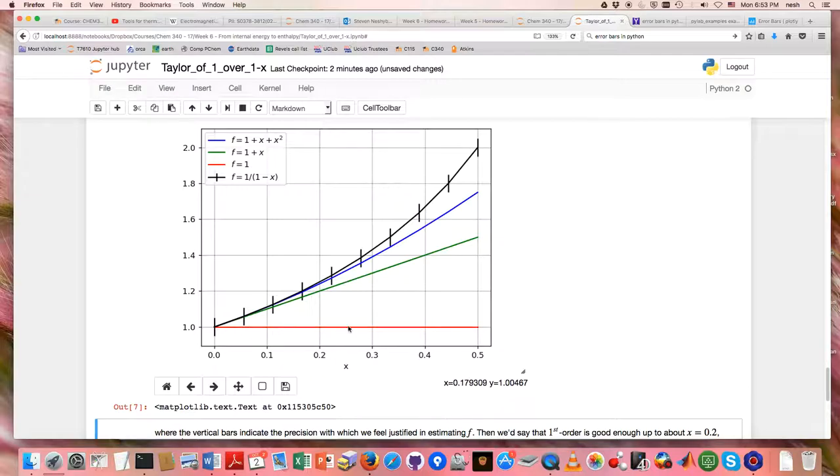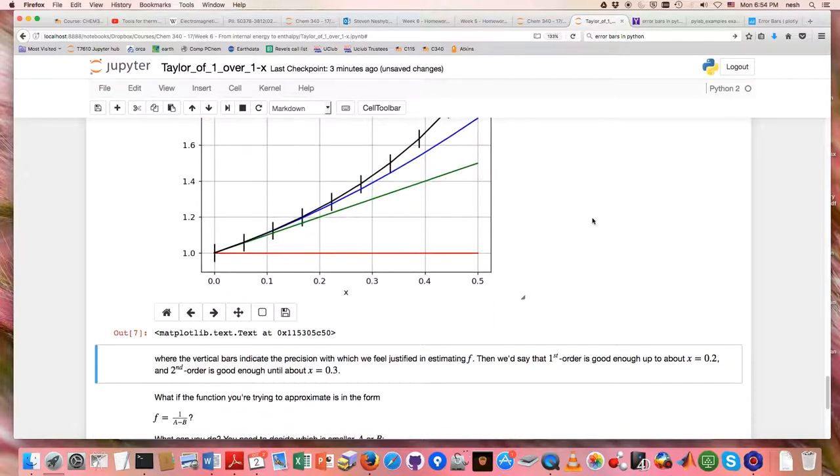And there are the error bars. So if that's how good we need to be, then obviously red, the zeroth order, doesn't do very well at all. Green, the first order approximation, does well until about 0.2. Blue does pretty well up until, let's say, within experimental uncertainty up to about 0.3.